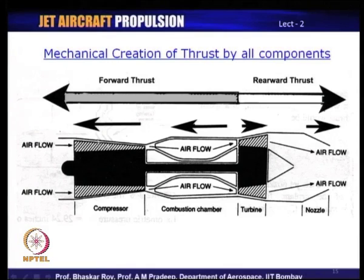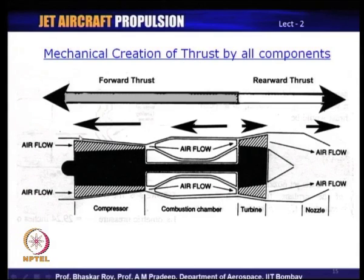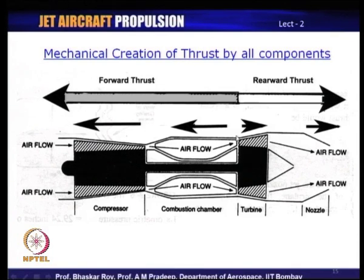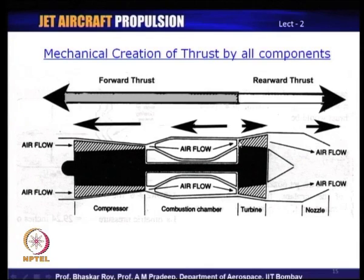The compressor creates a positive, forward thrust by virtue of the fact that pressure at the rear is higher — simple fluid statics shows that high pressure exerts a forward force toward the front. The combustion chamber also most likely experiences a forward thrust. The turbine, however, experiences a rearward thrust because pressure at the beginning of the turbine is higher than at the exit — fluid statics tells us this creates a rearward-directed force.